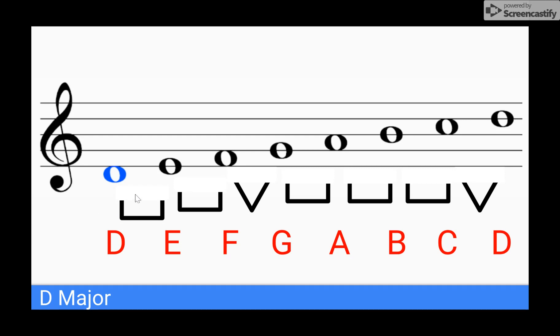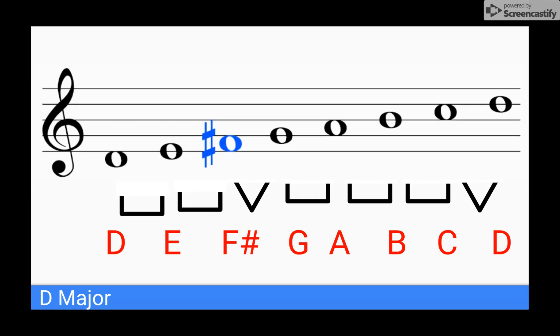So between D and E, I need a whole step. When I consult my keyboard, I see that is in fact what I have. Between E and F, I need a whole step. But when I look at the keyboard, I don't have a whole step. It's a half step because there's no black key. So what do I do? I move the F up a half step to F sharp.